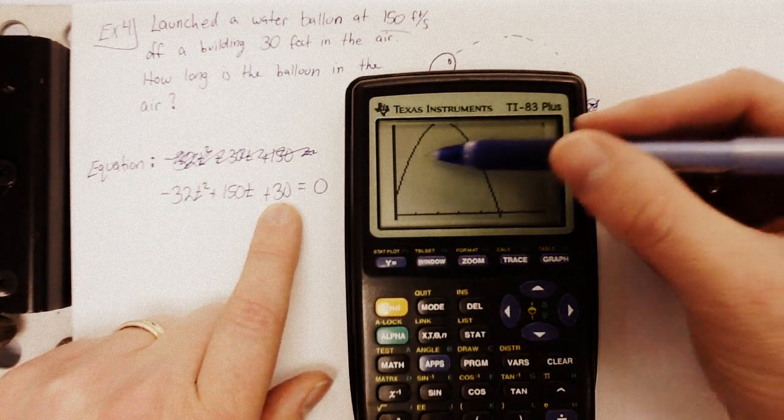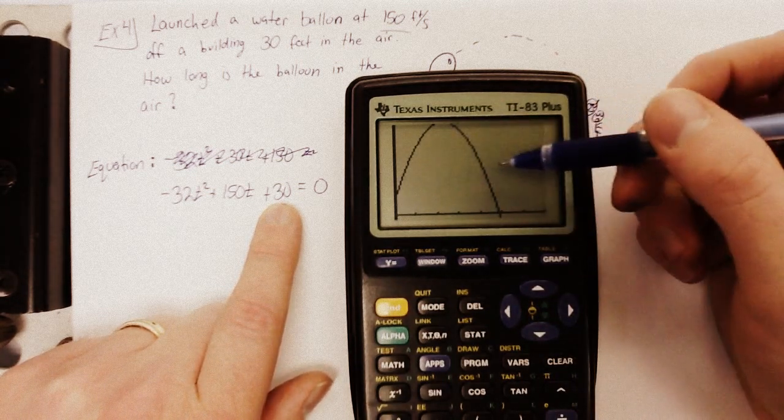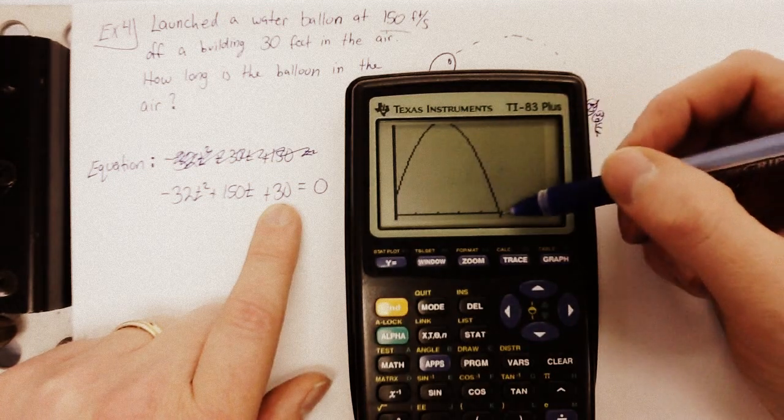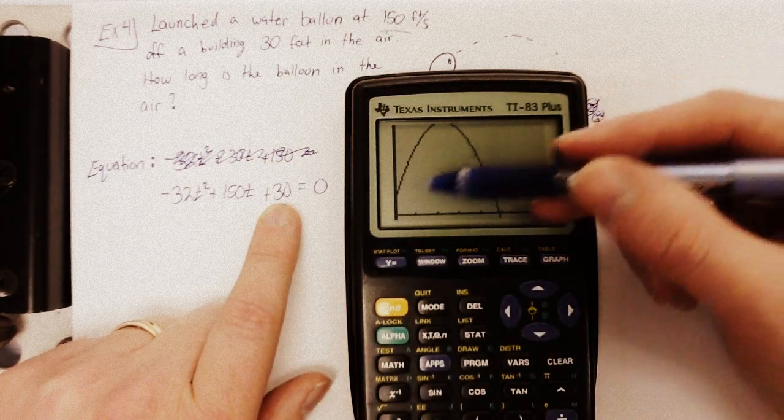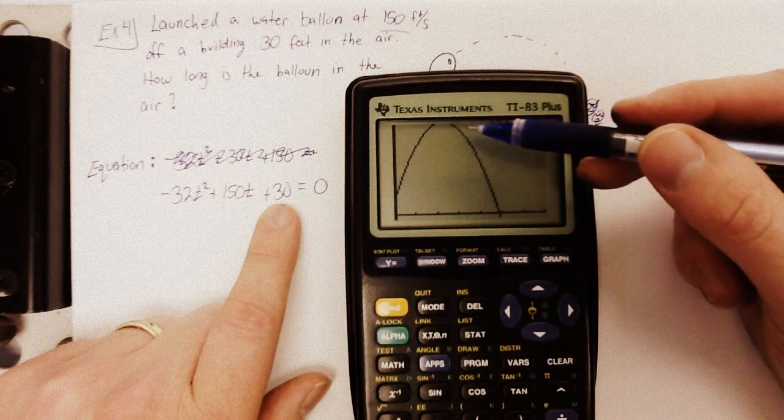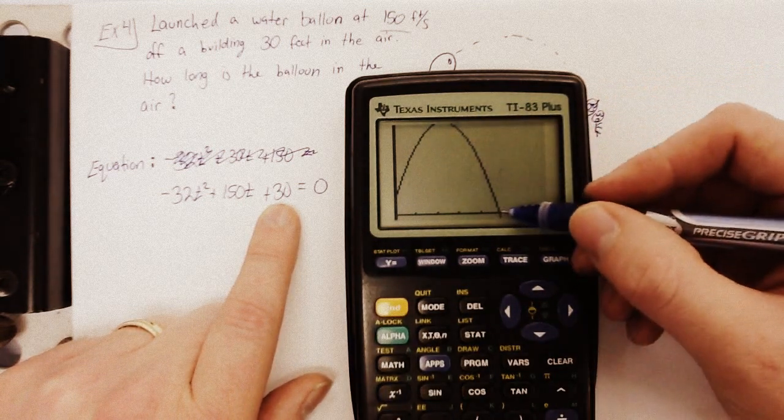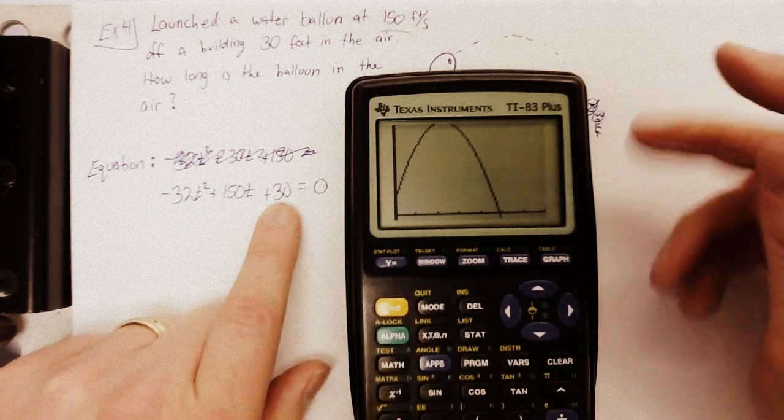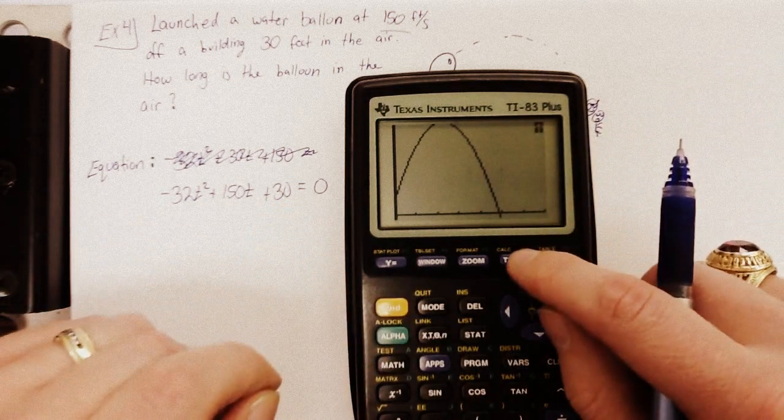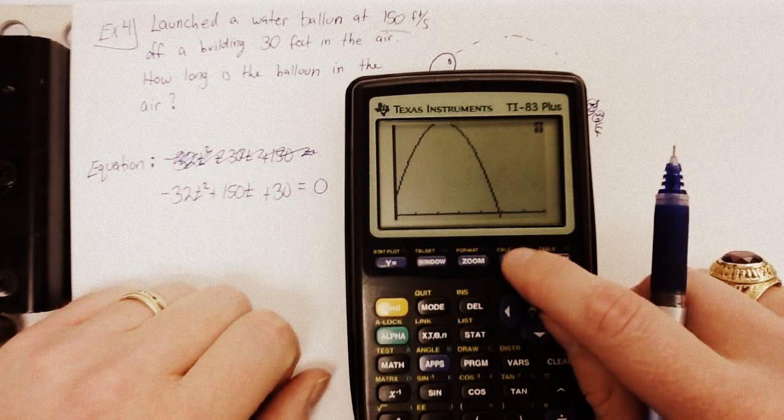All right, so you could play around with the window more and get it to fit nice, but really our question was, how long did it take to hit the ground? All right, well, started here, went up in the air, gravity took over, came back down, hit right there. All right, so wherever this crosses the x-axis, that's how long it took. So, here's where you're, here's how you apply what you've been doing. Second trace.